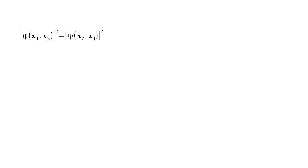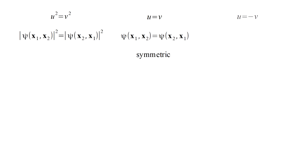A valid two-electron wave function must have the property that its magnitude squared does not change if the coordinates of the electrons are exchanged, since this is equivalent to simply relabeling indistinguishable particles. Now, what does this imply about the wave function itself? If u squared equals v squared, one possibility is u equals v: if psi(x1, x2) equals psi(x2, x1), the probabilities will be equal — a wave function symmetric with respect to exchange. But another possibility is u equals minus v, so psi(x1, x2) equals minus psi(x2, x1) — a wave function anti-symmetric with respect to exchange.